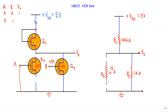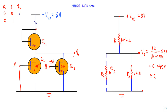With Q2 disconnected (R2 removed), we have a series connection of R1 = 100 kΩ and R3 = 1 kΩ from supply to ground. Using the voltage divider rule: V_out = (1k / (1k + 100k)) × 5 V = 0.049 V, which is approximately 0 V, so the output is at logic 0.